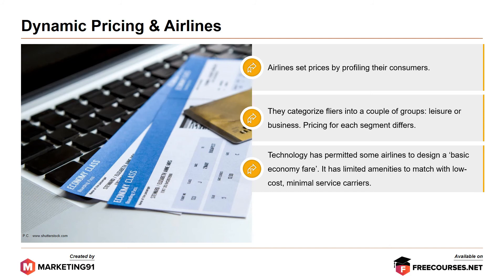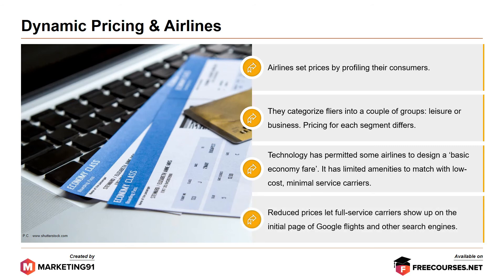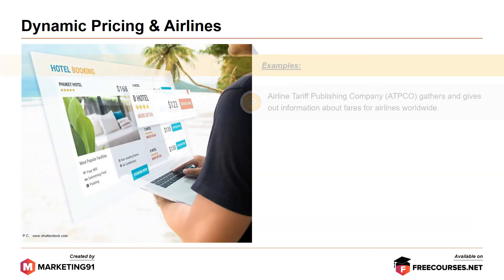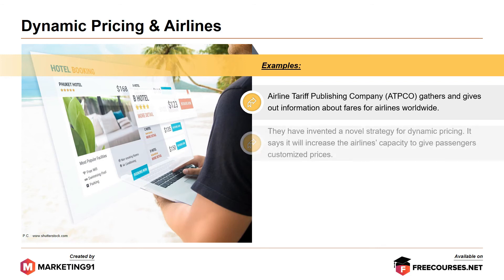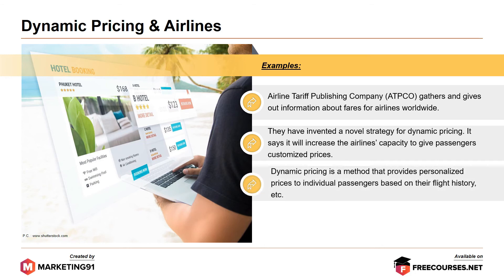Technology has permitted some airlines to design a basic economy fare with limited amenities to match with low-cost, minimal service carriers. Reduced prices let full-service carriers show up on the initial page of Google Flights and other search engines. The Airline Tariff Publishing Company gathers and distributes fare information for airlines worldwide. They have invented a novel dynamic pricing strategy that will increase the airline's capacity to give passengers customized prices based on their flight history.